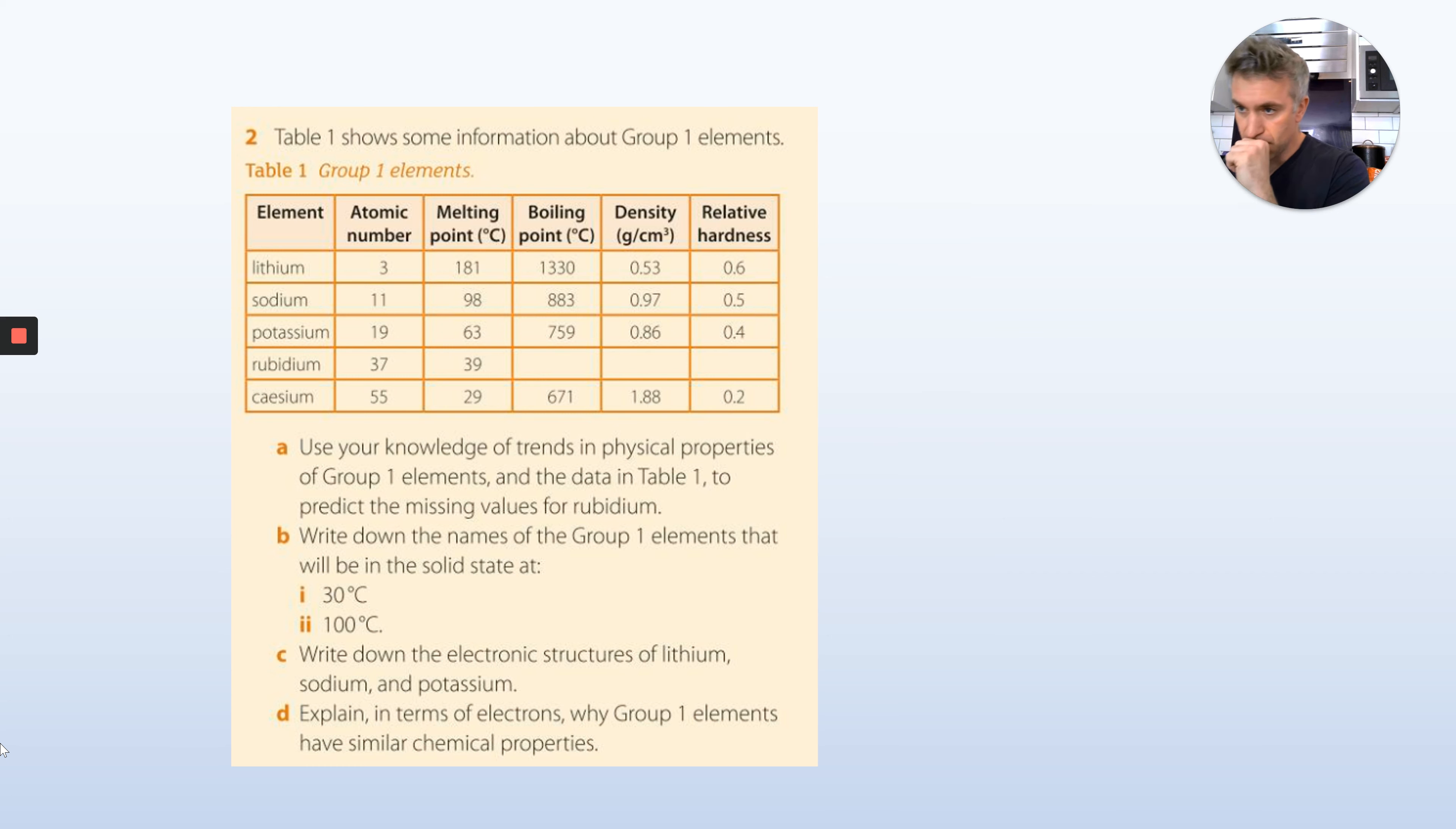The table shows information about Group 1 elements. Here we have, going across the top row, the atomic number, the melting point, the boiling point, the density, and the relative hardness. Notice melting point, boiling point, and density all have units. You've got lithium, sodium, potassium, rubidium, cesium. So in the periodic table we're going down Group 1, and you can see as we go down the atomic number gets bigger, the melting point gets smaller, the boiling point gets smaller, the density goes up, the relative hardness is going down. But there are three gaps.